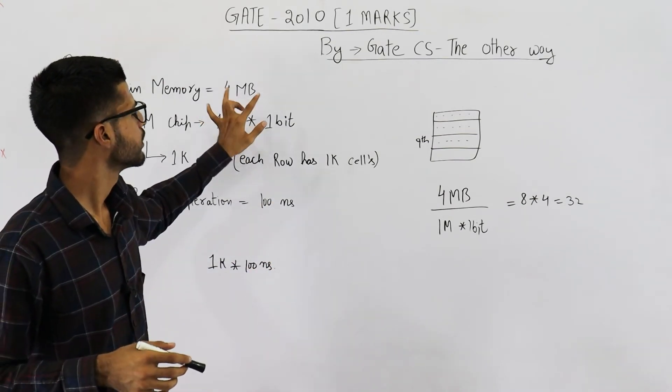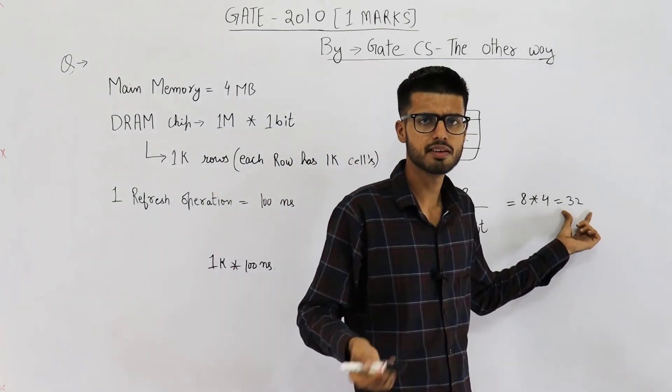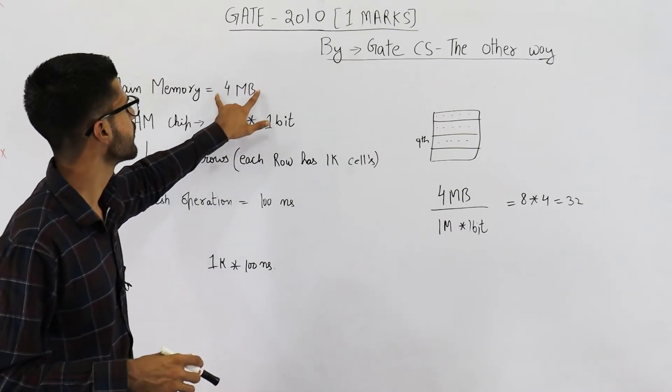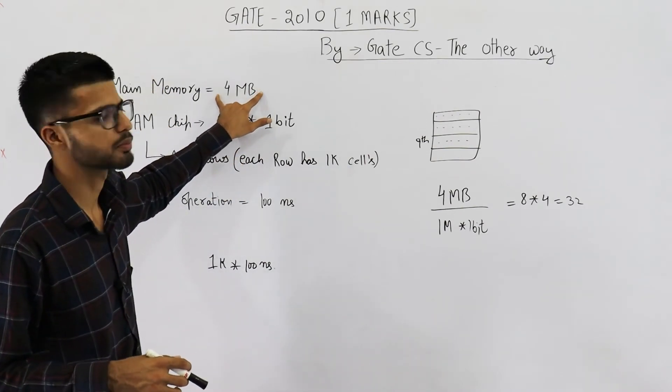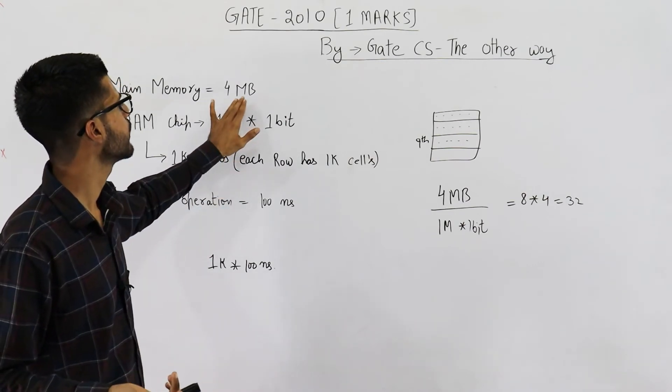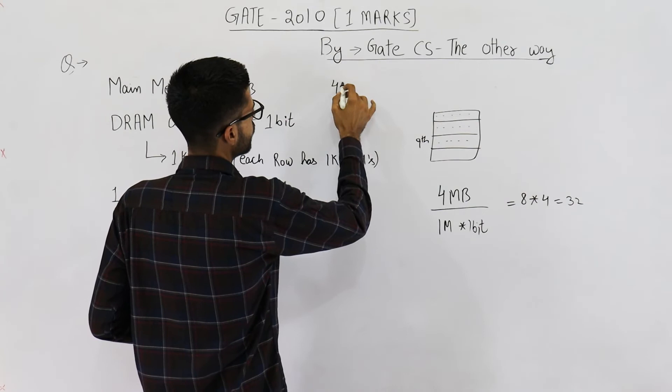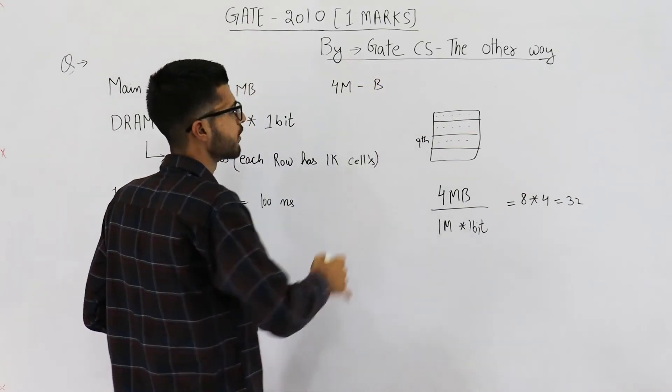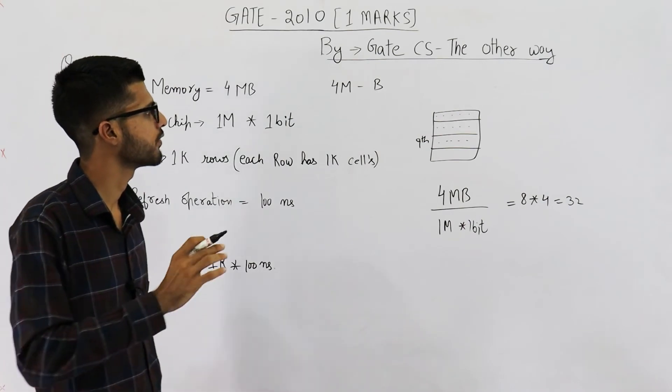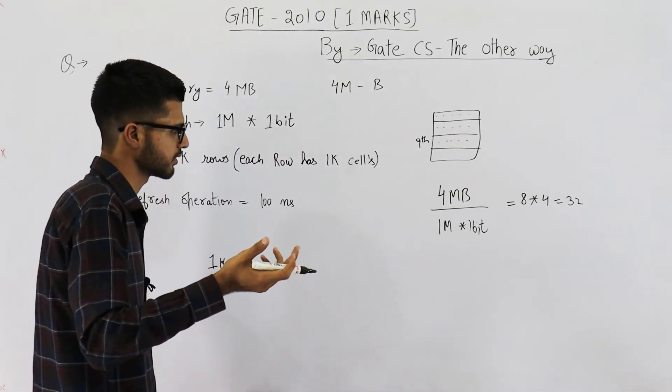Now, about this placement of chips, that how are we going to place these 32 chips? We cannot say anything. Because they haven't given you whether this memory is byte addressable or like, you cannot just conclude that this 4MB means 4M locations each of one byte. That cannot be concluded. So, placement of chips is really not known here.